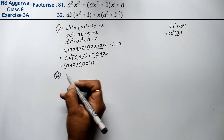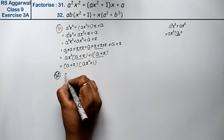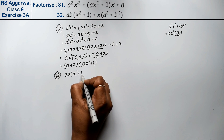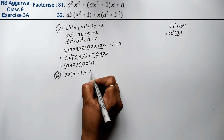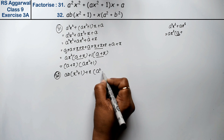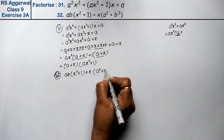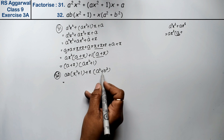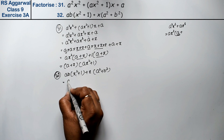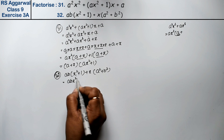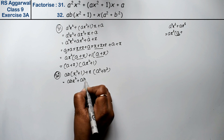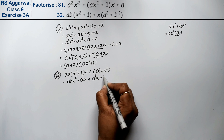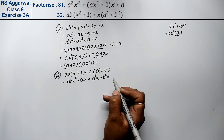Let's do question number 32. Question 32 is abx² plus (1 + x)(a² + b²). The two brackets are not the same, so we open the bracket and write: x² plus ab plus a²x plus b²x.